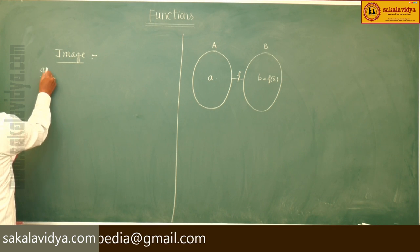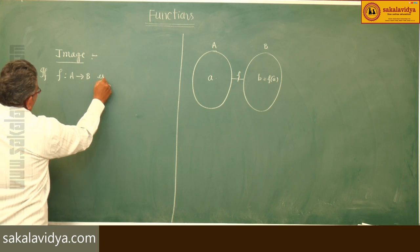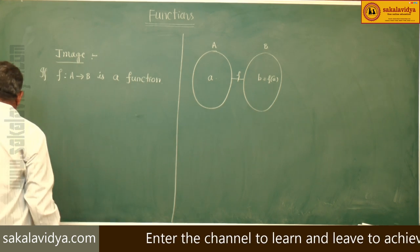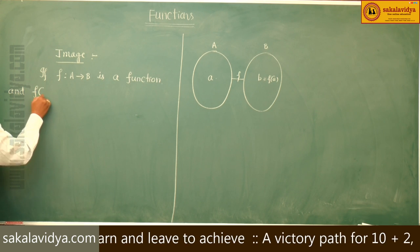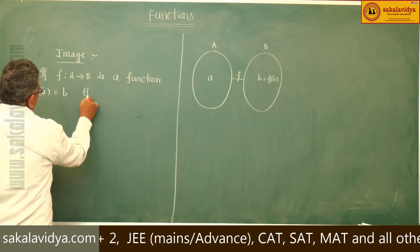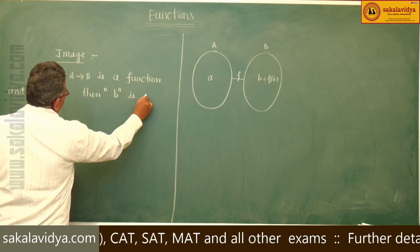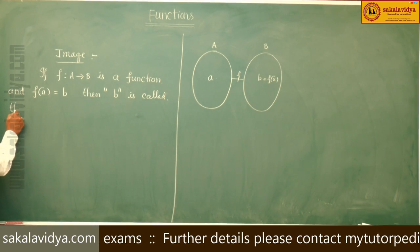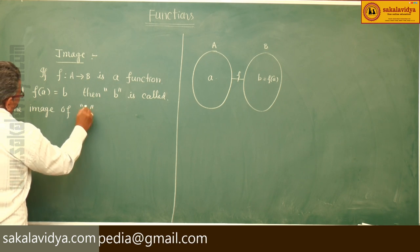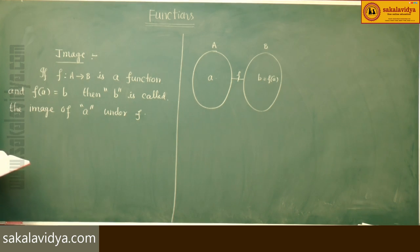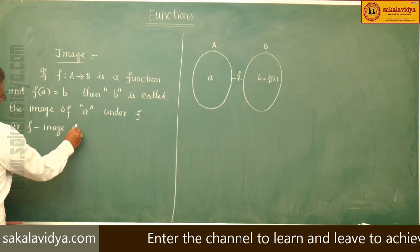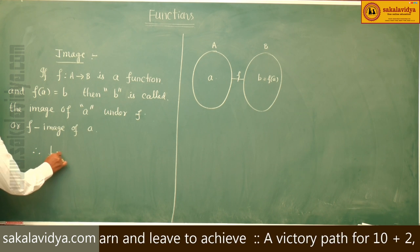If f maps A to B is a function, and f of a equals b, then b is called the image of a under f, or the f-image of a. So this can be written as b equals f of a.